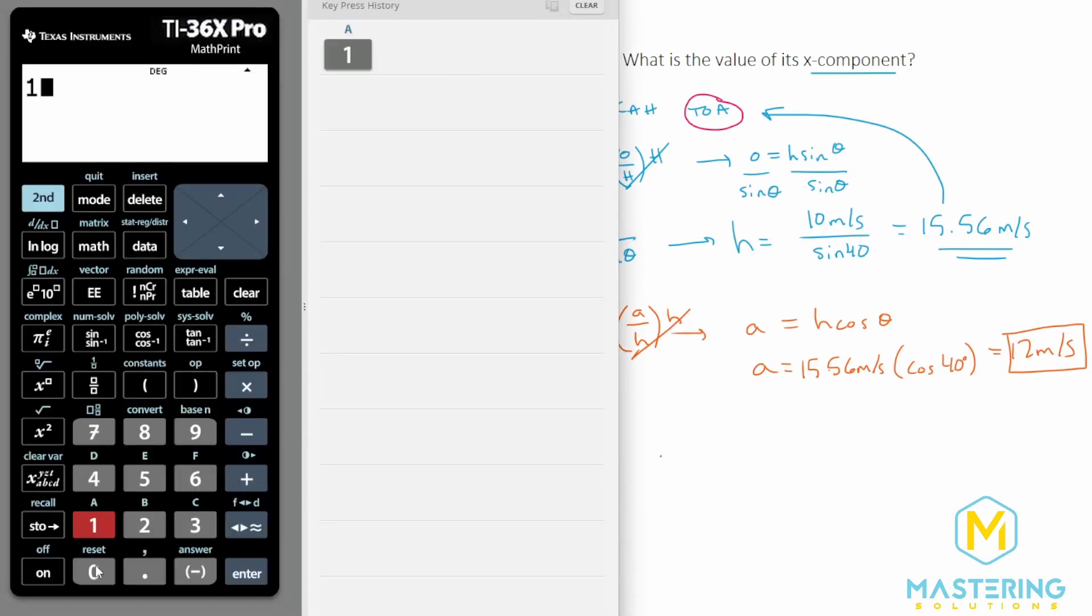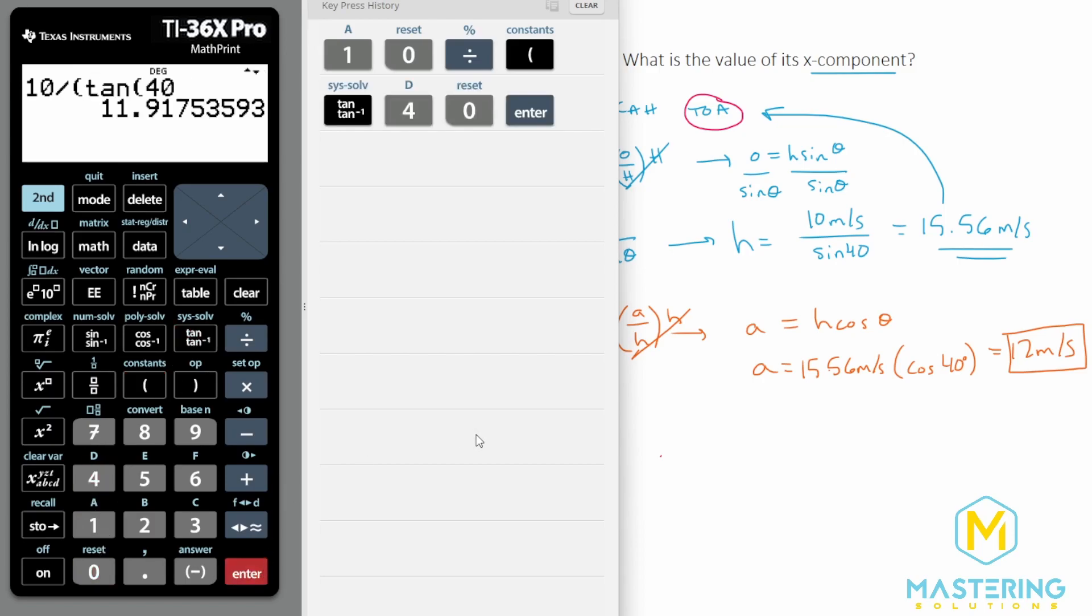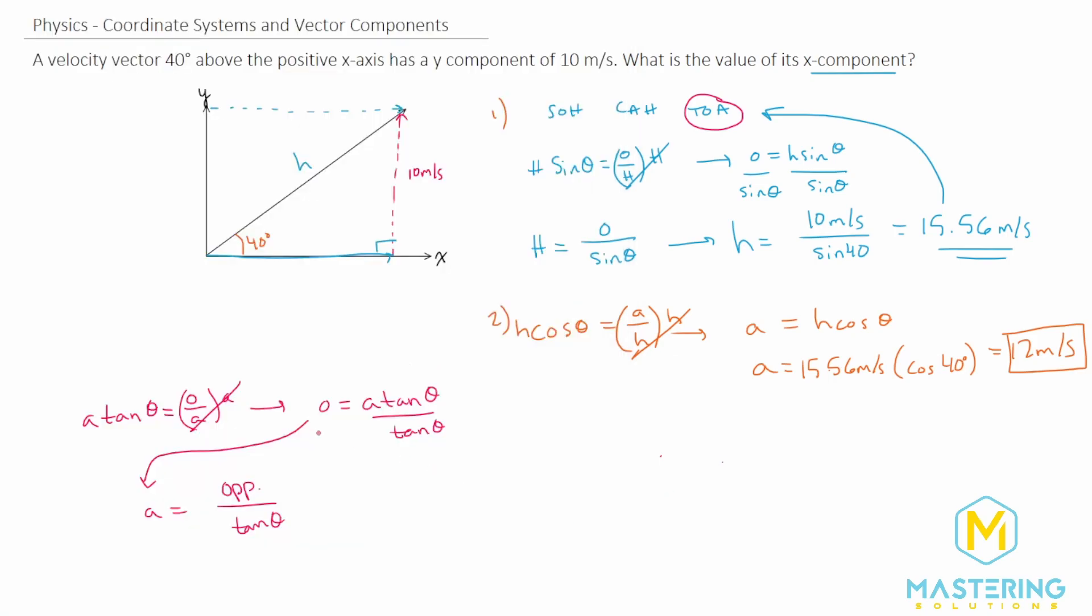So now when we plug this in, the opposite we said was 10, and then we'll divide that by tangent of theta, which gives us the exact same answer of 12. So as I said, it doesn't matter which way you go about it. It will give you the exact same answer either way, and the answer in this case is 12 meters per second for the x-component.